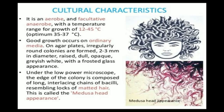On agar plates, irregularly round colonies are formed, 2 to 3 mm in diameter. They are raised, dull, opaque, and greyish-white with a frosted glass appearance. The colonies are irregular in shape and size, elevated above the surface, dull in color, and opaque — meaning not shiny and not see-through. The frosted glass appearance resembles the look of glass kept in a freezer, giving an ice-like structure.